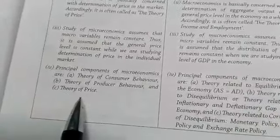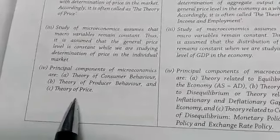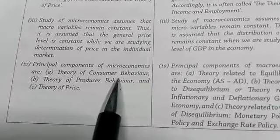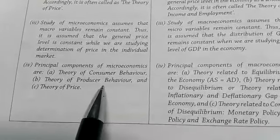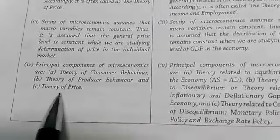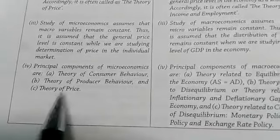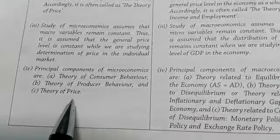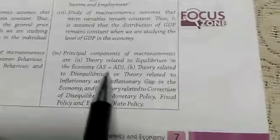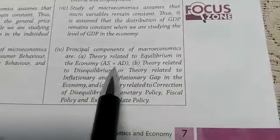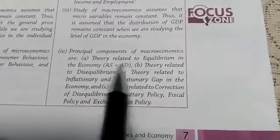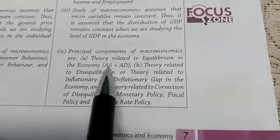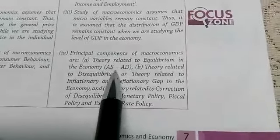These are the main components. Theory of consumer behavior — we study this under microeconomics. Theory of producer behavior, and theory of price — these are the components of microeconomics. On the contrary, in macroeconomics we study aggregate demand and aggregate supply, and the theory related to equilibrium in the economy.